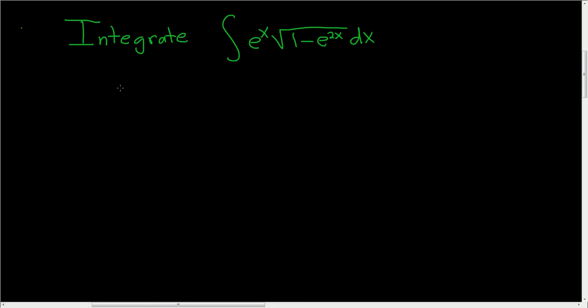In this problem, we're going to do an integral using trigonometric substitution. So the first thing to do is to think of the integral as follows. This is e to the x, and then we have a square root, and then 1 minus e to the x, quantity squared, dx.